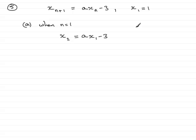Now we know what x_1 is, we're told that the first term in the sequence is 1, so x_2 will be a times 1 minus 3, and so we end up with a minus 3 for the second term in the sequence.